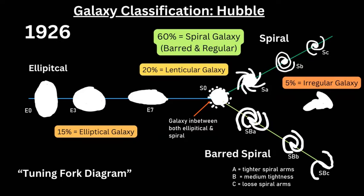Barred spiral means there's an accumulation of stars in a more rectangular shape in the center of the galaxy, while a regular spiral has just a single central point with spiral arms around it. There is also a degree difference based on how tight or loose the spiral arms are: a being tighter, b being medium, and c being looser. For barred spirals the notation is SBa, SBb, and SBc; for regular spirals it is Sa, Sb, and Sc.